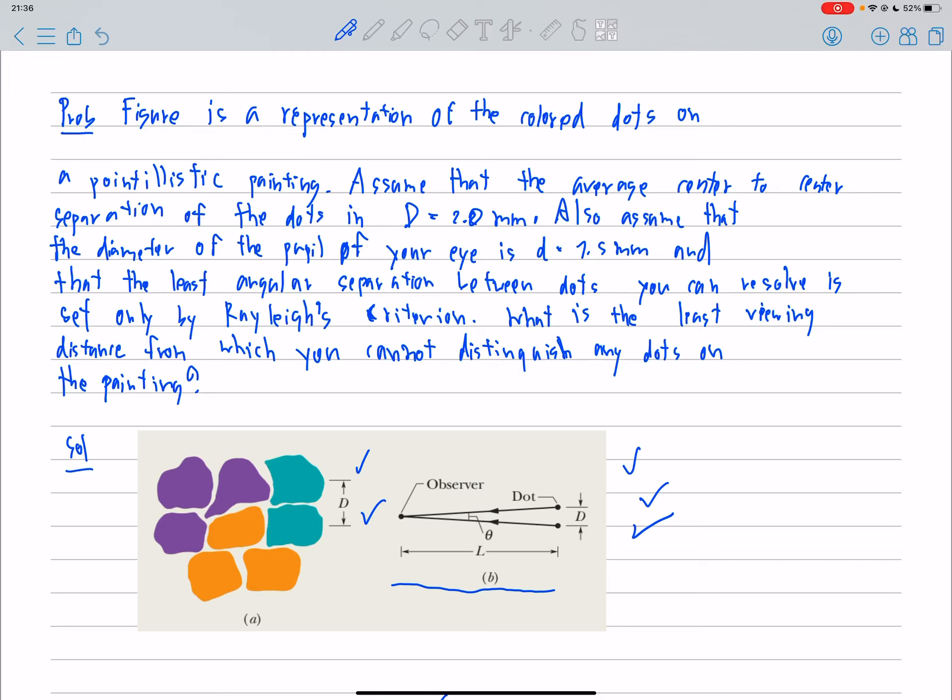The figure is a representation of the colored dots on a pointillistic painting. Assume that the average center-to-center separation of the dots in big D equals 2.0 mm.